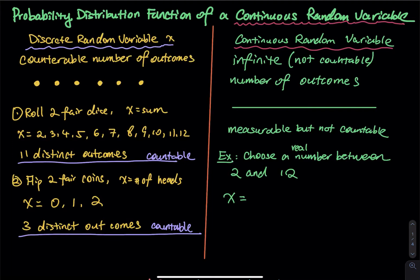For a discrete random variable x, every time you hear the word discrete, think about a countable number of outcomes. When people say the word discrete to me, one picture I create in my mind is I draw six dots. Do you see the six dots on my notes? Why are they discrete? Because I can use my finger to count that there are six dots.